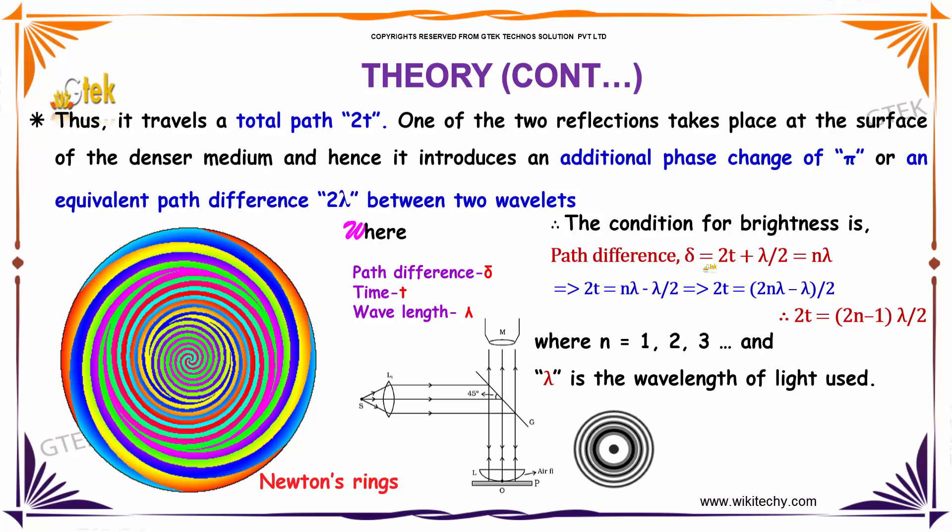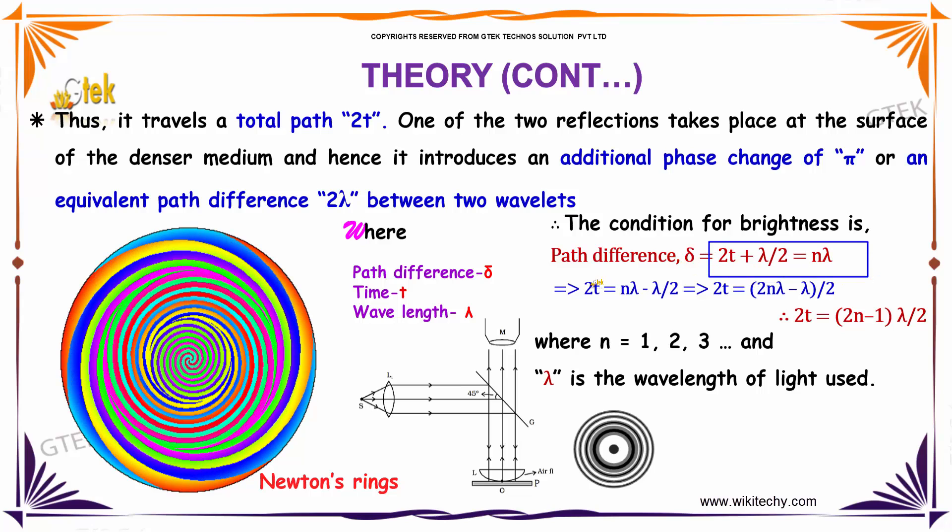Solving the above equation, λ/2 will become -λ/2 here. So 2T = nλ - λ/2.